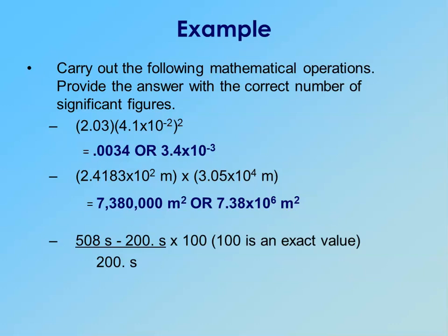We get 1.54, and then multiply by 100. The 308 and 200 each had three sig figs, giving three sig figs in the division result. The 100 is an exact value with an unlimited number of sig figs, so it doesn't impact our sig figs. Multiplying 1.54 by 100 — as we often do in percent calculations — gives a final answer of 154.